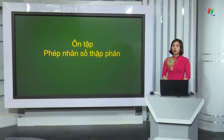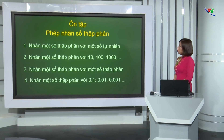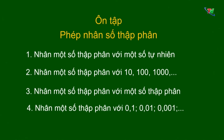Trong tiết học hôm nay, cô sẽ hướng dẫn chúng ta ôn tập lại về phép nhân số thập phân. Nội dung ôn tập hôm nay gồm 4 phần: Phần 1, nhân một số thập phân với một số tự nhiên; 2, nhân một số thập phân với 10, 100, 1000, v.v.; 3, nhân một số thập phân với một số thập phân; 4, nhân một số thập phân với 0,1; 0,01; 0,001, v.v.